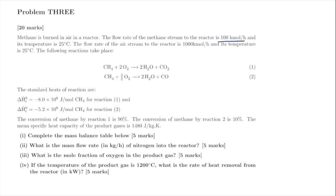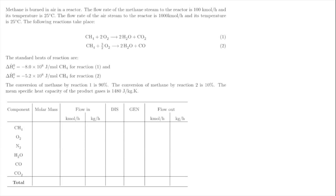The final problem is the long answer question: 100 kmol per hour of methane at 25°C is combusted with 1,000 kmol per hour of air. There are 2 reactions taking place with 2 heats of reaction given in the problem. Conversion by reaction 1 is 90% and by reaction 2 is 10%. The air feed gives 790 kmol/hr of nitrogen and 210 kmol/hr of oxygen (ratio 79:21).